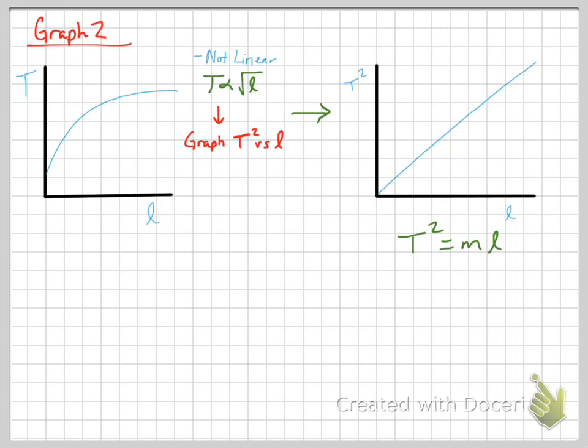Now in both graph one and graph two, which are curved, you're going to have a data set, a data table. You'll end up having to square a set of data to get to this point. In graph one, you would have to take all the values of B and square them to linearize the graph. In graph two, you would have to take all the values of T and square them to linearize the graph.